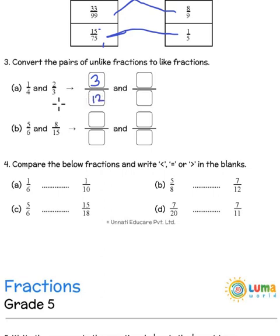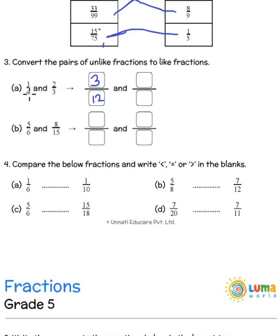LCM stands for the lowest common multiple. For 4, the multiples are 4, 8, 12, 16, 20, etc. Multiples of 3 would be 3, 6, 9, 12, 15, 18, etc. The lowest common between them would be 12, and that is how we have converted the common multiple here as 12. And for 3 becoming 12: 3 multiplied by 4 is 12. So when I multiply the denominator by 4, I multiply the numerator also by 4. So it becomes 3 by 12 and 8 by 12.